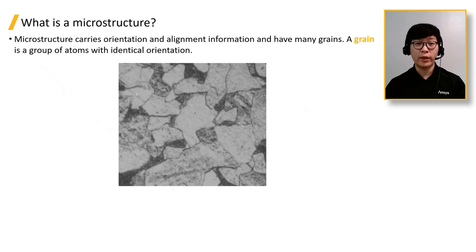First, what is a microstructure? Microstructure carries information on the microscopic orientation and alignment of metal atoms. It can have many grains. And a grain is a group of atoms with identical spatial orientation.